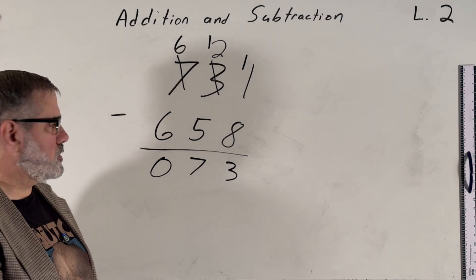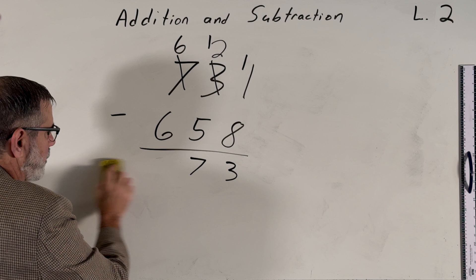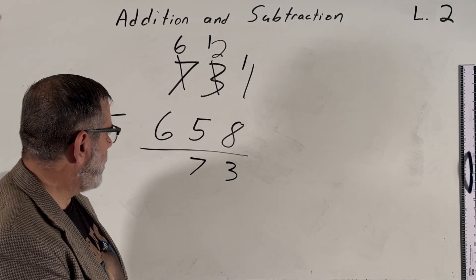But we don't really need to write a zero, because leading zeros don't really make a difference. 073 is the same thing as 73. And so that completes that problem.